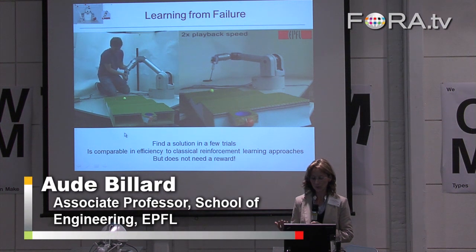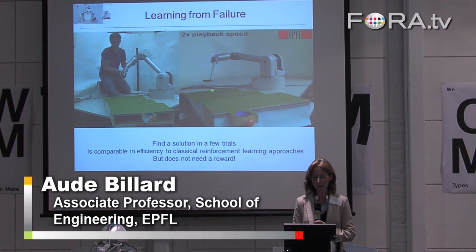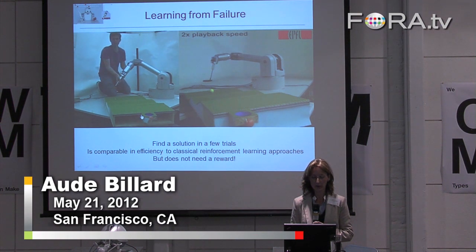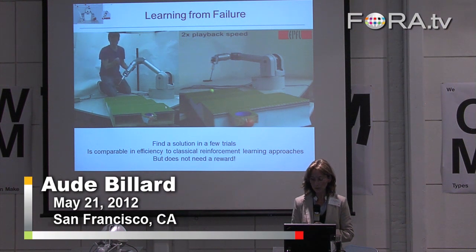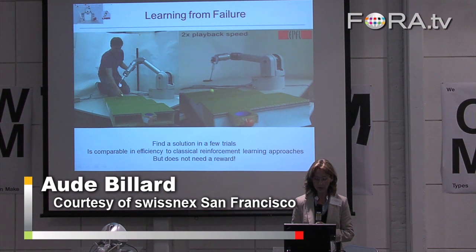So before, we were doing a lot of programming by good demonstration, and we were trashing all these bad examples. But then we decided that we will keep these bad examples and have the robot again learn how to achieve a good hitting speed. So what we are learning here is the speed at the target and the orientation.